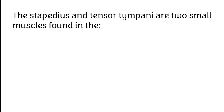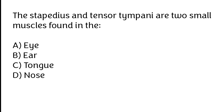The stapedius and tensor tympani are two small muscles found in the: eye, ear, tongue, nose. The correct answer is option B. The stapedius and tensor tympani are two small muscles found in the ear.